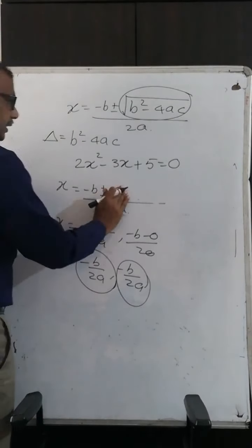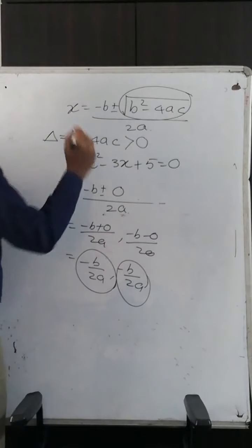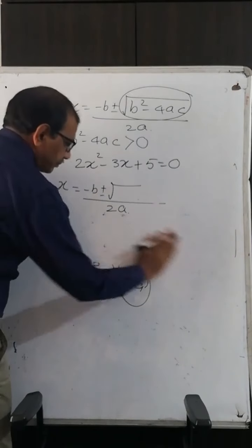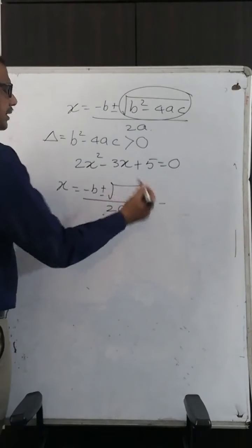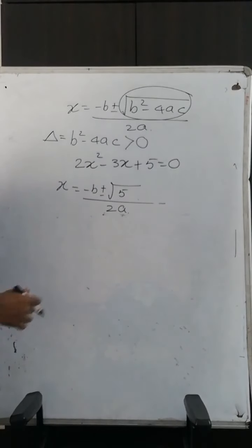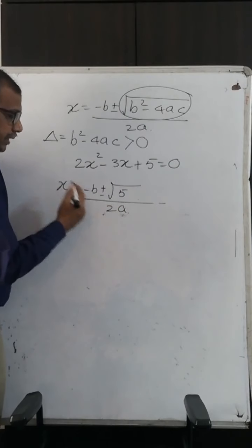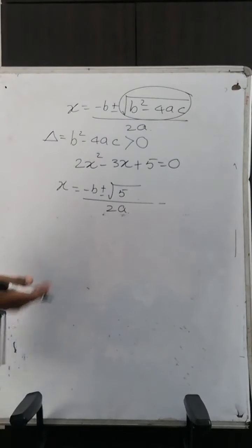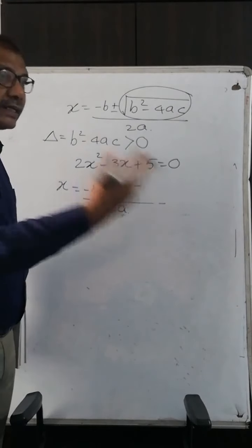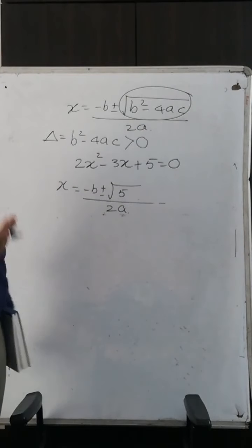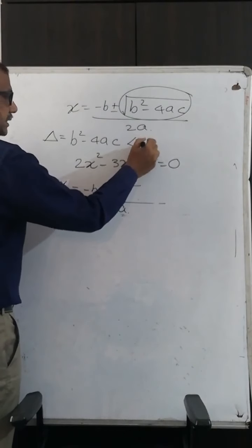If B squared minus 4AC is greater than 0 — meaning it is a positive number, say for example 5 — then the roots will be minus B plus root 5 upon 2A, and minus B minus root 5 upon 2A. In that case, both of them are real roots but they are distinct — distinct means different.